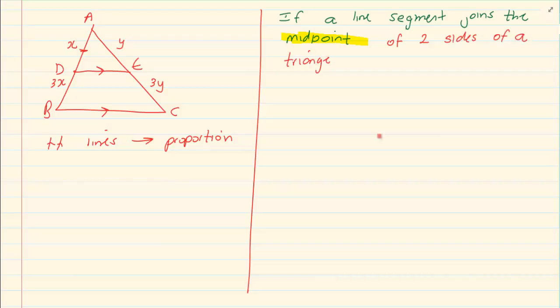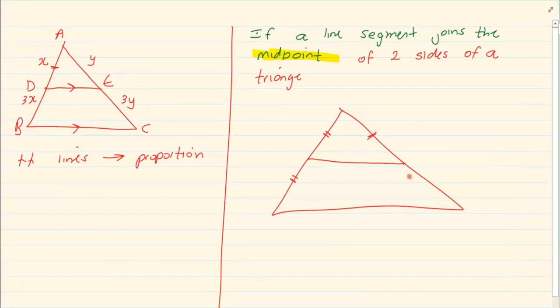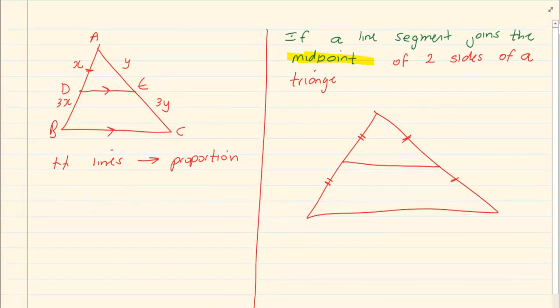So what is it saying? It's saying that I have a triangle and I have a line segment. But as soon as I put this line segment, it is cutting it in half.